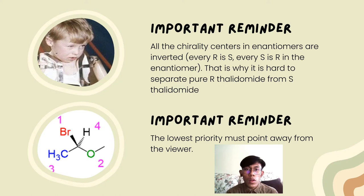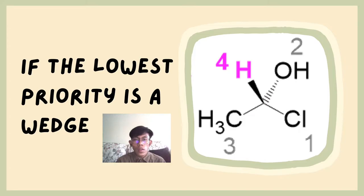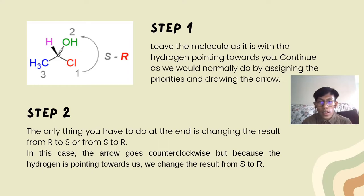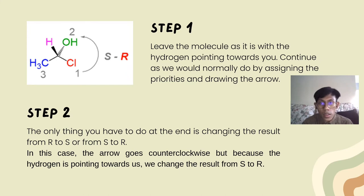Another important reminder is that the lowest priority ligand must point away from the viewer. Now, in a case where the lowest priority ligand is not pointing away from the viewer, we still draw an arrow from the most priority ligand to the least priority ligand. Let's say the arrow goes counterclockwise — since the least priority ligand is pointing towards us, we must change the result to the opposite, meaning the absolute configuration is actually R.